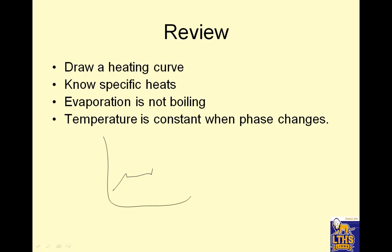Review: a low specific heat means something that changes temperature quickly; a high specific heat means something that changes temperature slowly. Evaporation is not boiling. And temperature is constant when the phase changes. That is all — toodles.